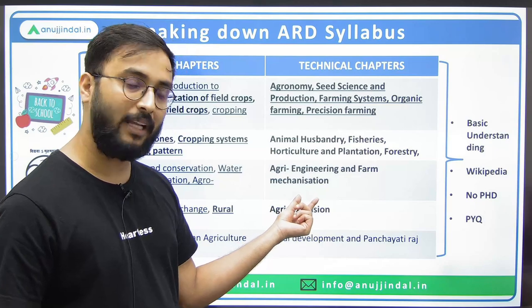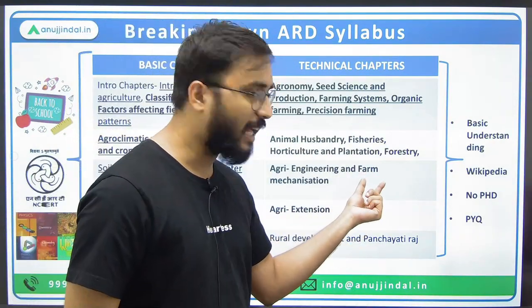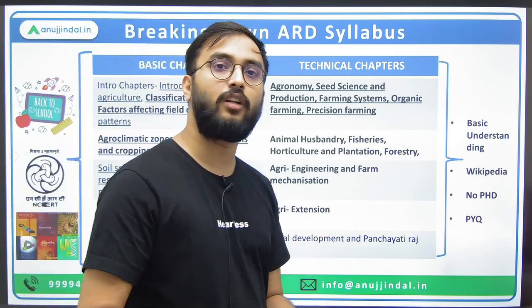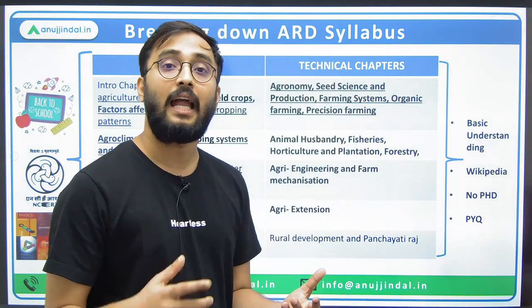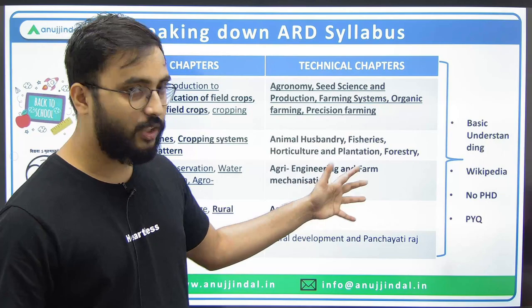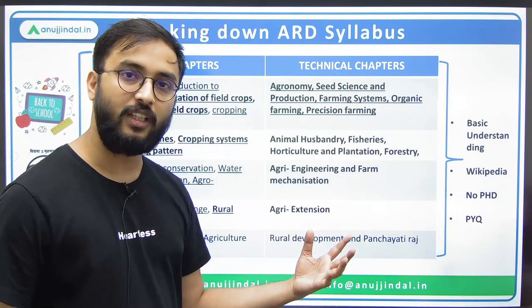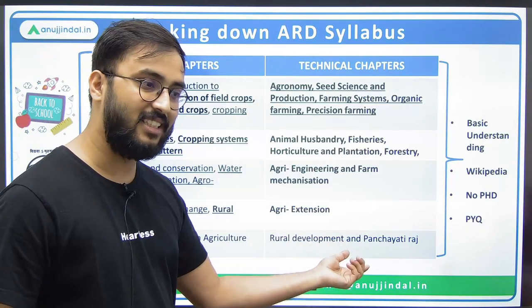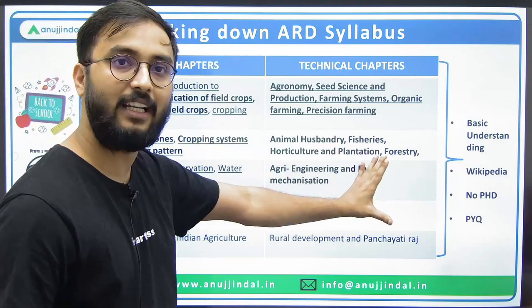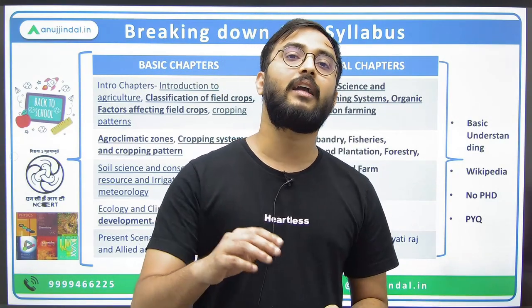Similarly, agri engineering and farm mechanization — all the instruments and machinery used in agriculture, from tractor to rotavator — you just need to read briefly; no deep research is required. Then comes agri extension: how agricultural awareness, education, and services are provided at a rural scale. Agri engineering, farm mechanization, and agri extension have very few marks in total, so just a brief reading is required. Then rural development and Panchayati Raj, which you have already covered in basics — anything remaining can be done through government schemes and PIB. All ARD chapters can be beautifully segregated into basic and technical chapters. You just need basic knowledge — agricultural background is not necessary.